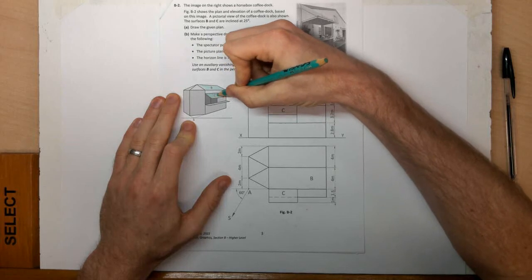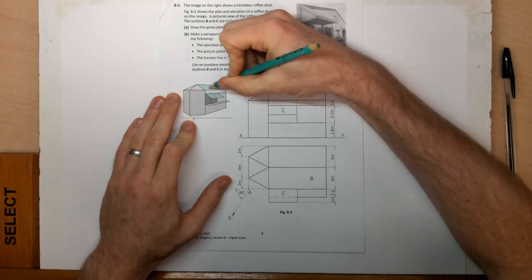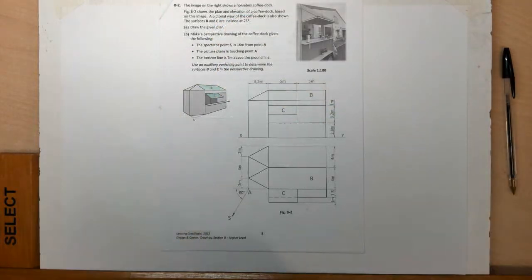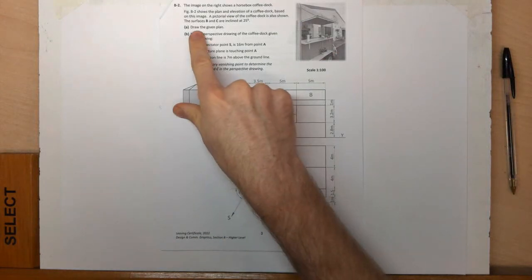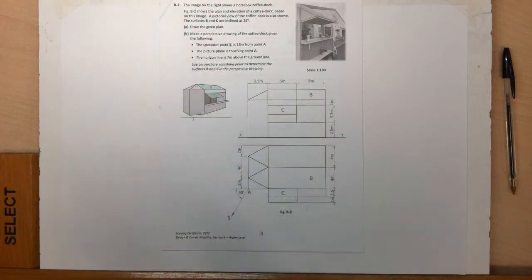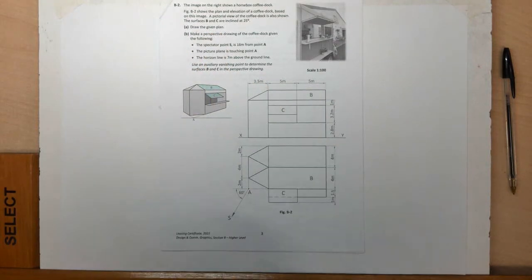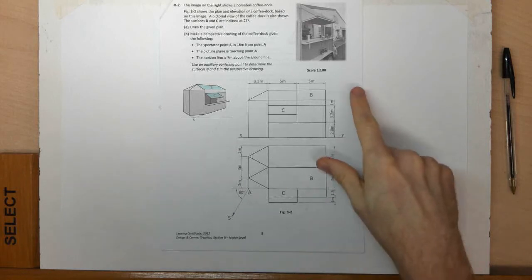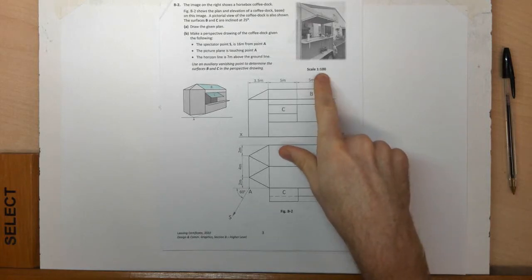Being a perspective question, we will need to use auxiliary vanishing points for both of those surfaces. First off, they want us to draw the given plan. Here is our plan view. They are just requiring us to reproduce it, and we have a scale of 1 to 100.